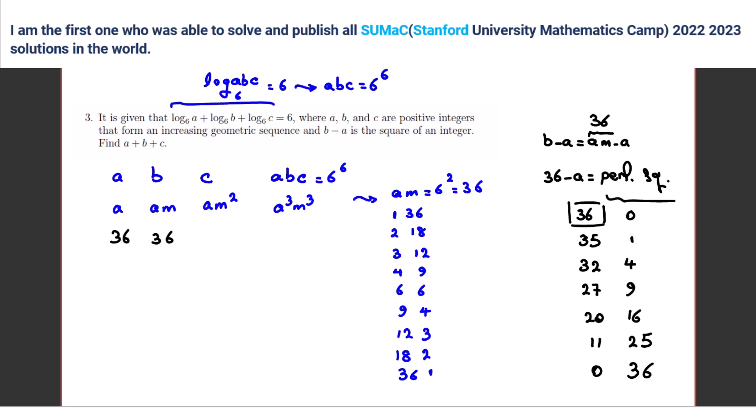if you want to consider this we know b is 36 36 minus a is perfect square so we cannot select for example 32 if a is 32 m is what so let's consider okay if a is 32 m is what s equal q